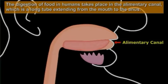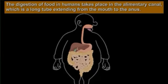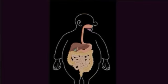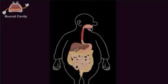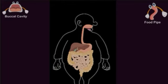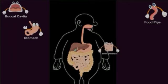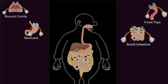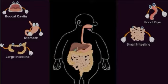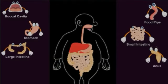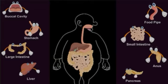What is the alimentary canal? It is a long tube from the mouth to the anus. Now we will see which organs help in digestion. The first is the buccal cavity, second is the food pipe, third is the stomach, fourth is the small intestine, fifth is the large intestine, then the anus, and then the liver and pancreas.